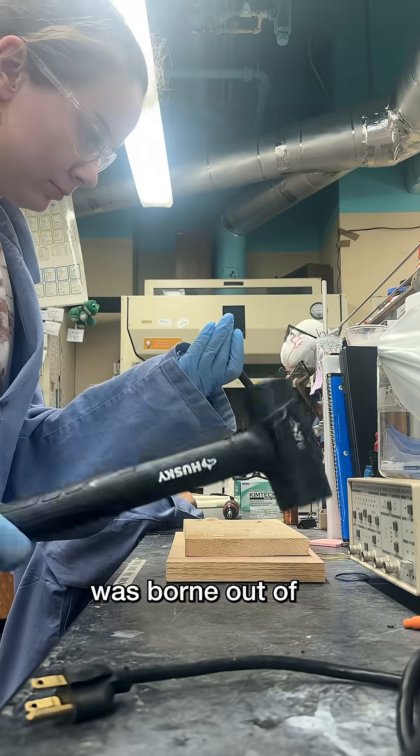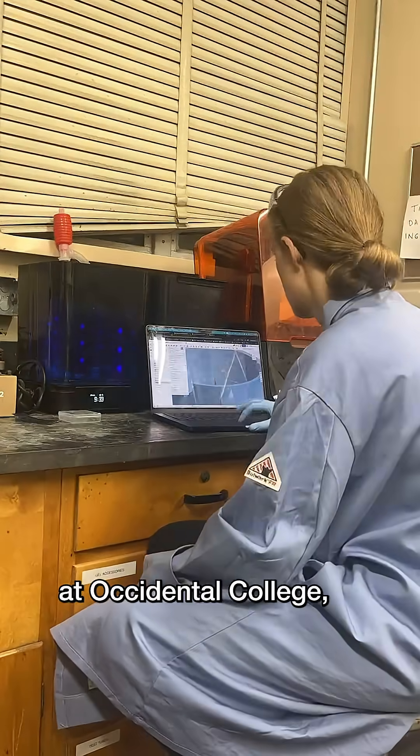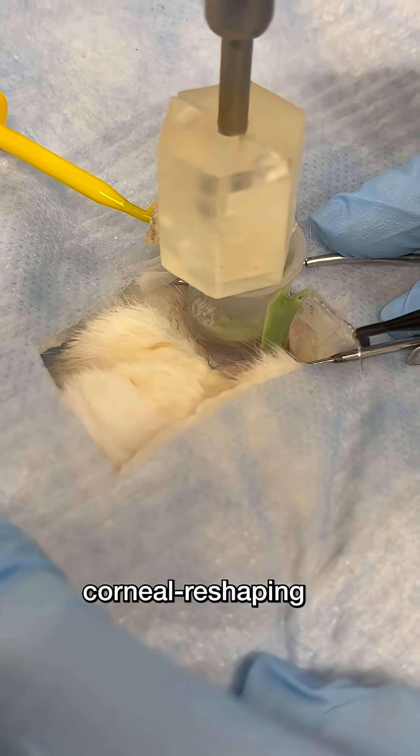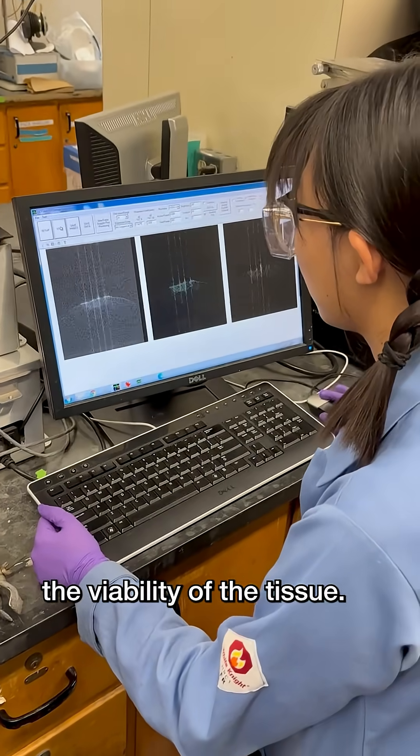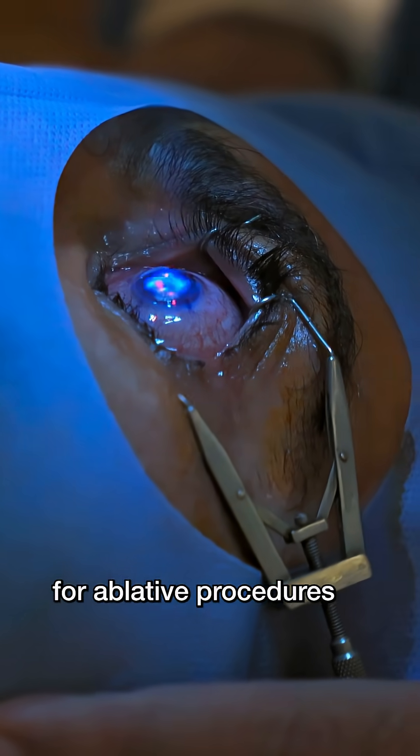This molecular approach to surgery was born out of a collaboration between a surgeon at UC Irvine and a chemist at Occidental College, which produced this: a simple, highly customizable corneal reshaping method that doesn't damage the structure or the viability of the tissue, so could potentially be used on corneas not suitable for ablative procedures like LASIK.